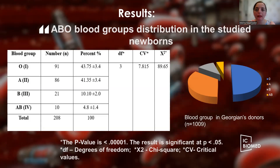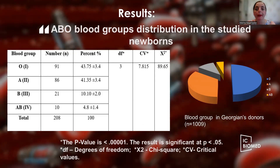Regarding the results, this slide shows the ABO blood group distribution in the studied newborns. The total number of newborns was 208, and the majority — 43.75% — belong to the O blood group. This is followed by the A blood group at 41.35%. The B blood group was found in only 21 newborns, with a prevalence of 10.10%.